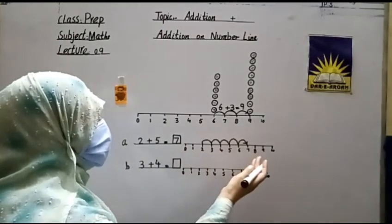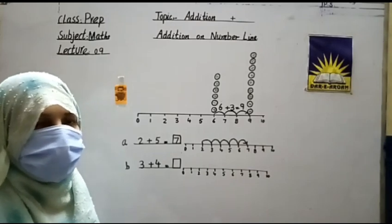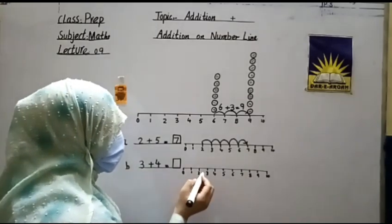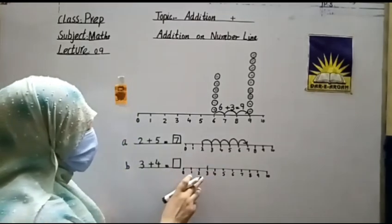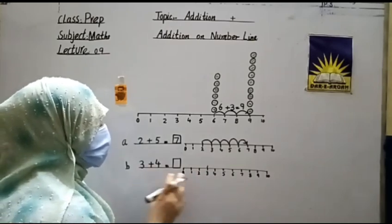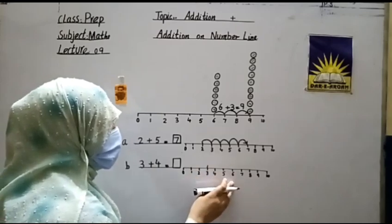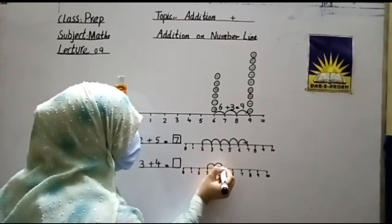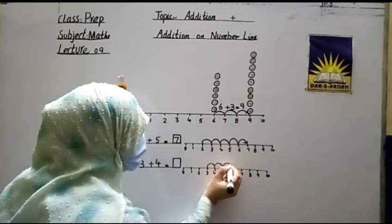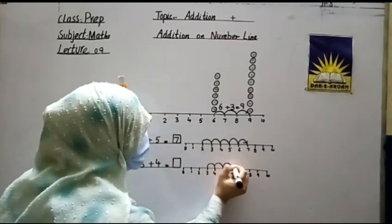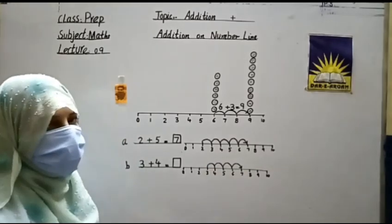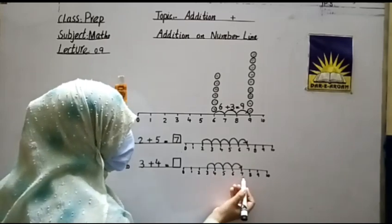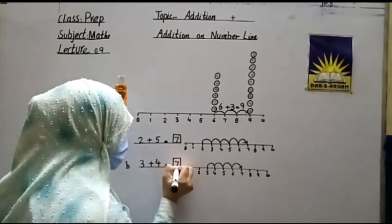Next question is three plus four. We start at three and make four jumps on the number line left to right: one, two, three, four. Make an arrow here. Look at the number below — it is seven. So the answer is seven. This is a very interesting topic.